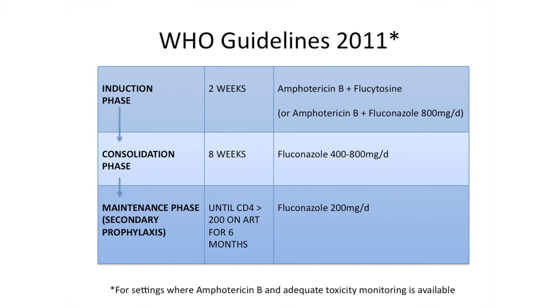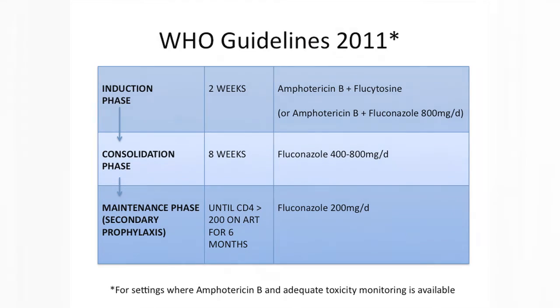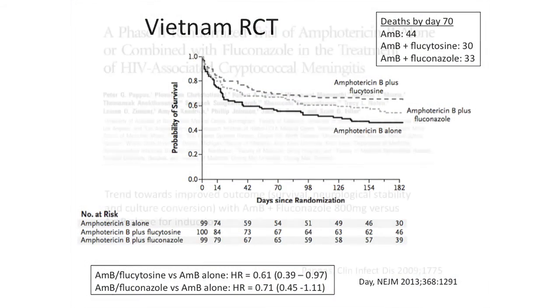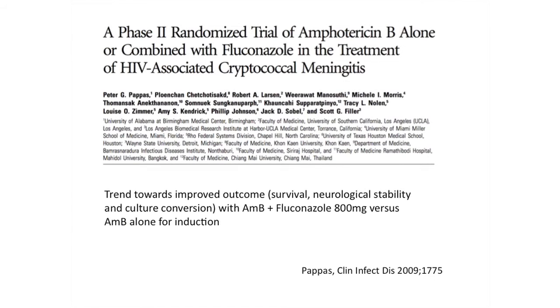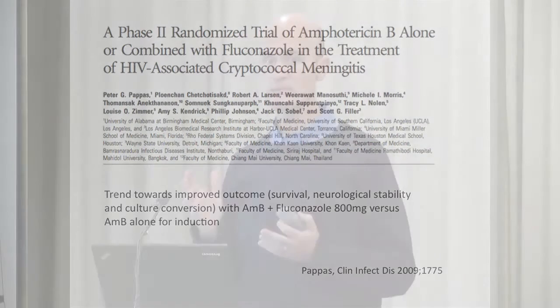The WHO guidelines from 2011, based partly on this data, suggest amphotericin B plus flucytosine. Given limited access to flucytosine in many developing world countries, a second-line option was provided: amphotericin B plus fluconazole as initial therapy. This is based on the Vietnam data showing a trend, as well as a Peter Pappas study from Thailand showing a trend towards improved outcomes with amphotericin B plus fluconazole compared to amphotericin B alone. In South Africa, we don't have access to flucytosine, so we use induction therapy with amphotericin B plus high-dose fluconazole 800mg daily. The data is not as robust as for flucytosine, but there's a suggestion it's superior to amphotericin B monotherapy.